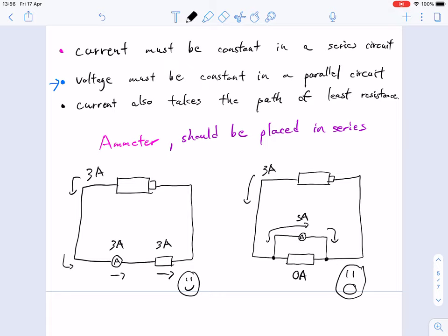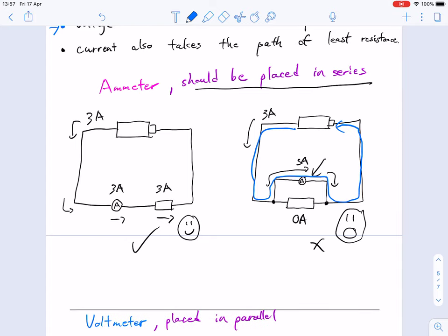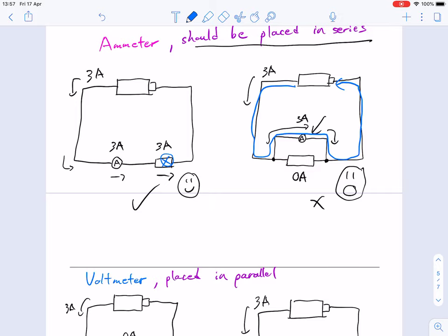A good ammeter has no resistance and should be connected in series with circuit components. Here's a good example and a bad one. An ideal ammeter has no resistance, so current wants to flow through it. In the bad example, current skips our component through the ammeter. If we have a light bulb, it wouldn't turn on. In the good example, with the ammeter in series, the light bulb turns on and carries the same current.